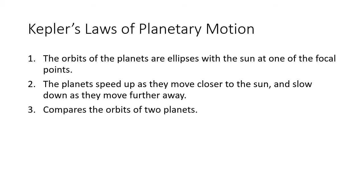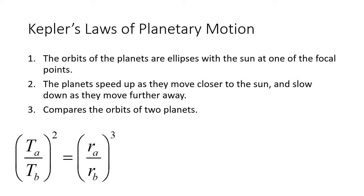Kepler's third law compares the orbits of two planets. As you will see it on your equation sheet for tests and exams, it tells us that if we take the ratio of the orbital periods of two planets A and B and square that number, and then take the cube of the ratio of those two planets' average distances from the Sun, we get the same number. This rule lets us figure out things about the orbit of one planet using data about the orbit of another.